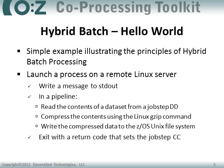Let's get started with our Hello World example. In the demonstration that follows, we're going to use Cozy to launch a process on a remote Linux server that will write a message to standard out, then in a Unix pipeline read the contents of a data set from a job step DD, compress that data using the Linux GZIP command, and write the compressed data back to ZOS to a Unix file system file. Finally, it will exit with a return code that sets the job step condition code.